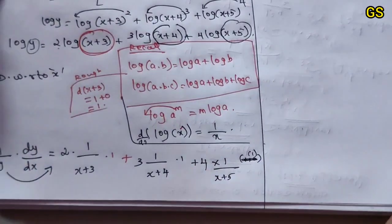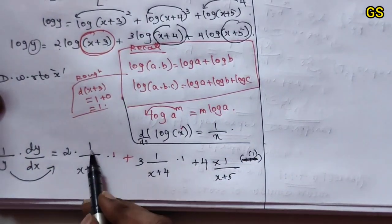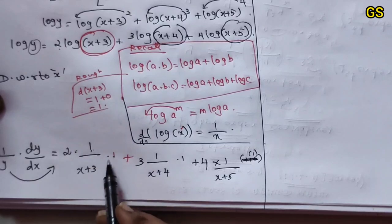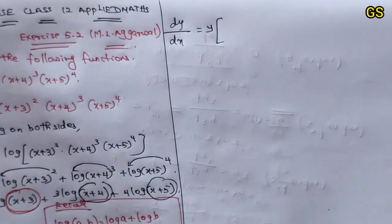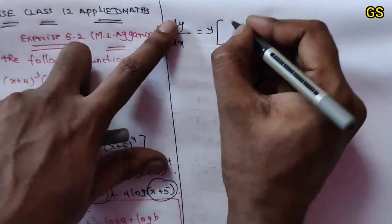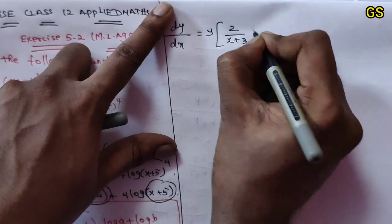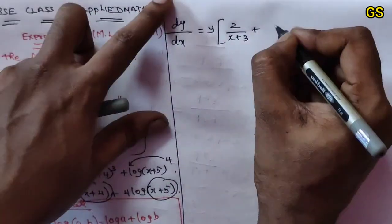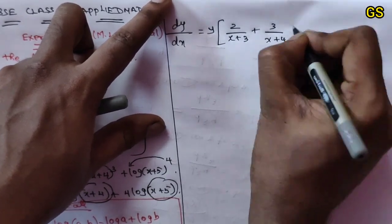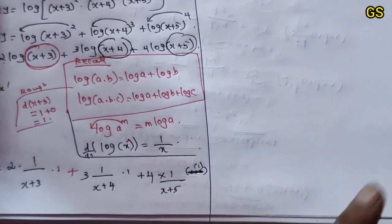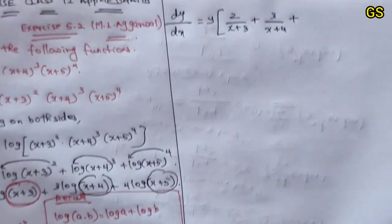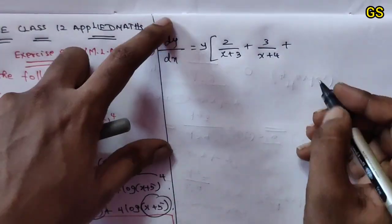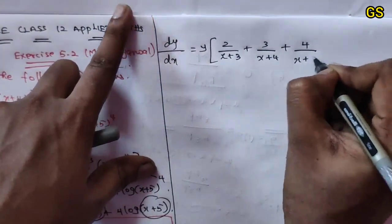So dy/dx: we get 2 into 1 into 1 gives 2 by (x plus 3), plus 3 into 1 into 1 gives 3 by (x plus 4), plus 4 into 1 into 1 gives 4 by (x plus 5).